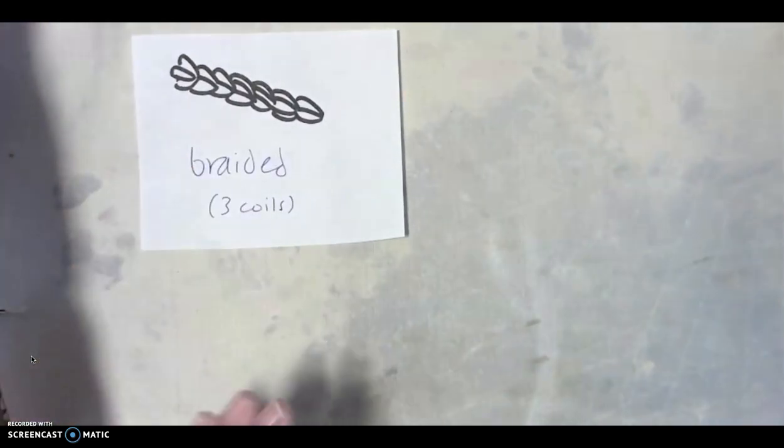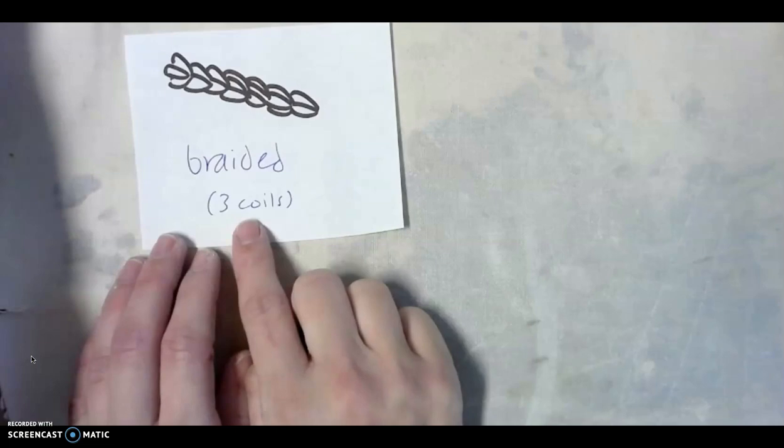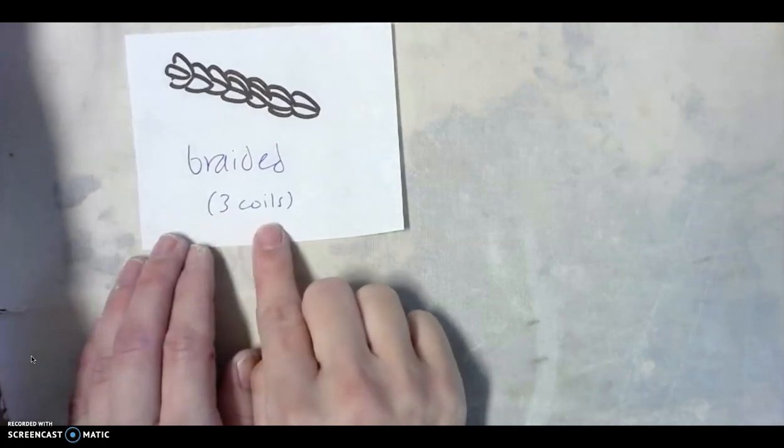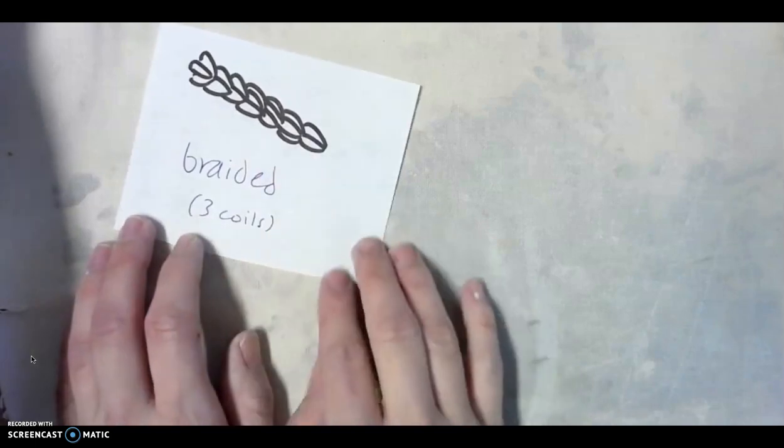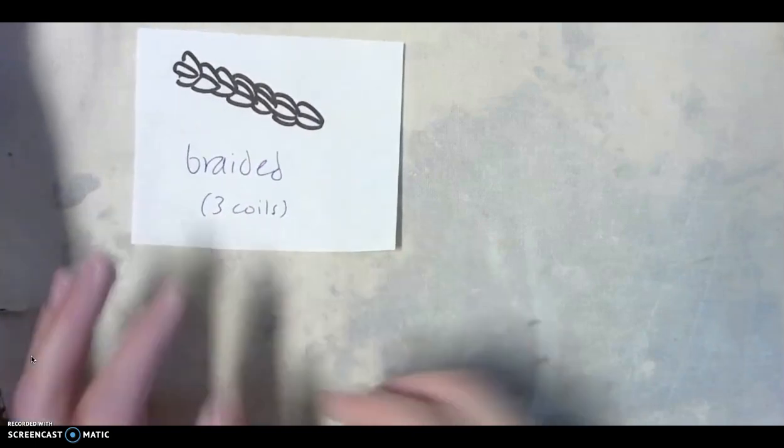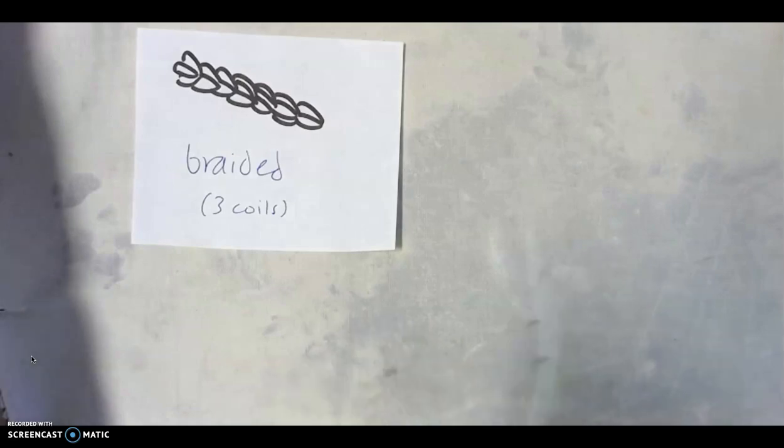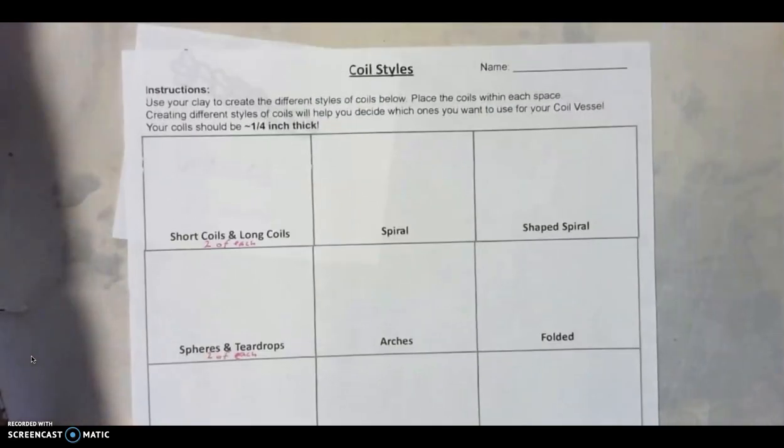Our last one in this demo is braided. Now I don't know how to braid, but if you know how to braid hair, you can braid coils. All you do is you take three coils and you wrap them around each other in a pattern. That's my best attempt at drawing it. But there you go. Those are the different styles. And now you're going to actually practice using this worksheet.